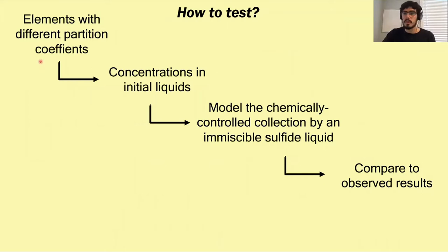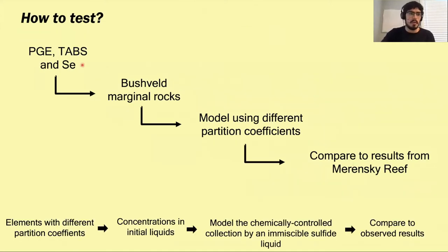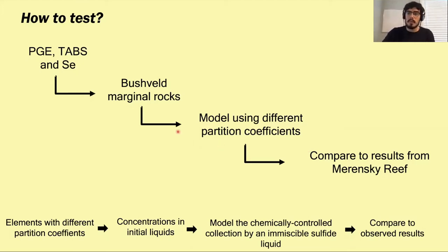In one model we look at partition coefficients; in the other we look at surface properties of these nanoclusters. To test this, our idea is to take elements with different partition coefficients, look at their concentrations in the initial parental liquids, model their chemically controlled distribution using different partition coefficients, and see if we can reproduce what we find in different deposits. More specifically, we look at PGEs, TABS, and selenium — which have different partition coefficients — in the marginal rocks of the Bushveld as a proxy for our initial liquids.